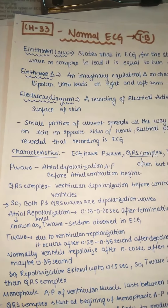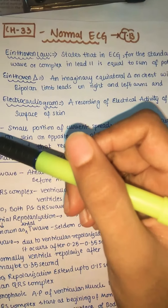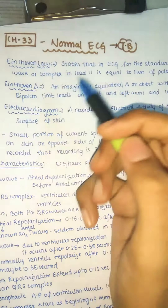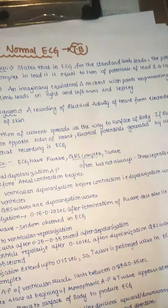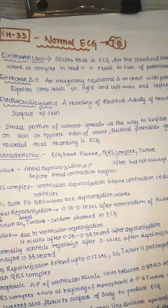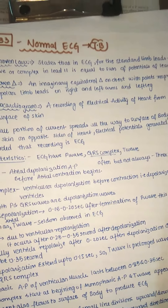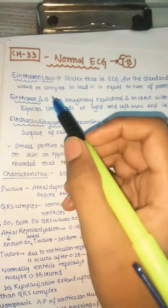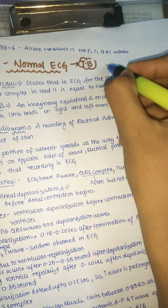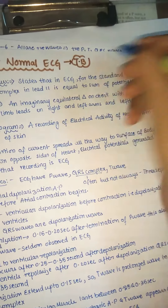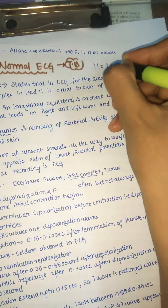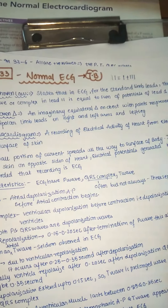First we need to check out Einthoven's Law. It states that in ECG, for the standard limb leads, the potential of any wave or complex in Lead 2 is equal to the sum of potentials of Lead 1 and Lead 3. As a formula: Lead 2 = Lead 1 + Lead 3.